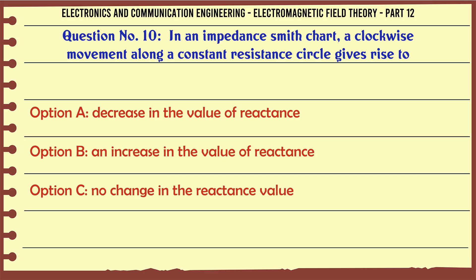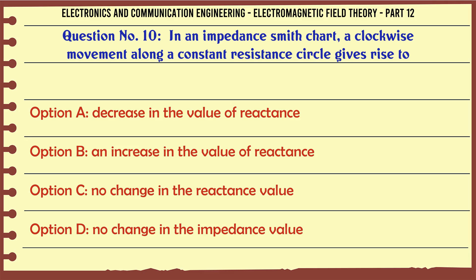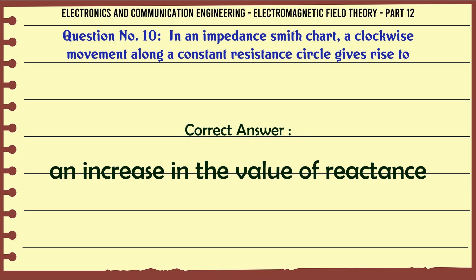In an impedance Smith chart, a clockwise movement along a constant resistance circle gives rise to: A. A decrease in the value of reactance, B. An increase in the value of reactance, C. No change in the reactance value, D. No change in the impedance value. The correct answer is an increase in the value of reactance.